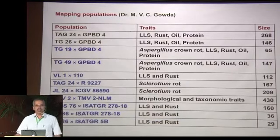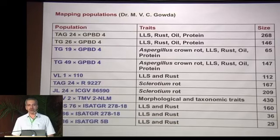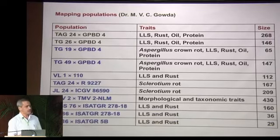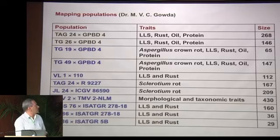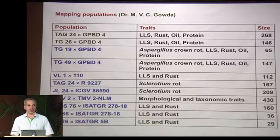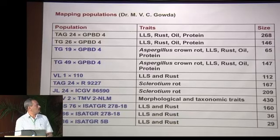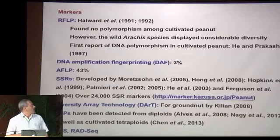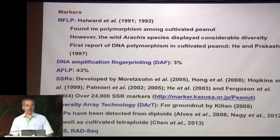A major advantage was that Dr. M. Ustigavad had already developed several mapping populations at UAS Dharwar. These were available to me in 2009. Out of many mapping populations, two were studied extensively: TAG-24 × GPBD-4 and TG-26 × GPBD-4. GPBD-4 is a foliar disease resistant variety developed by Dr. Ustigavad in 2006. It is highly resistant to foliar disease and the populations have a very large RIL size.